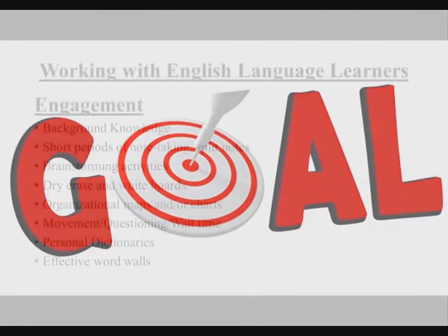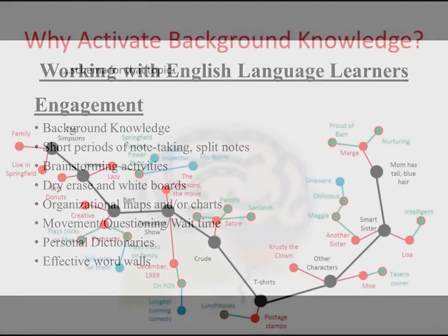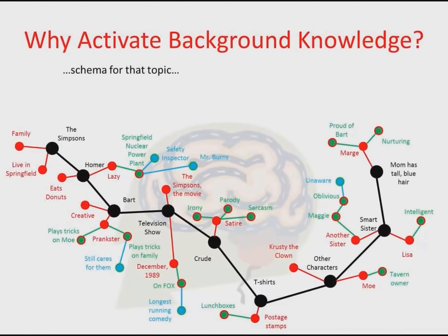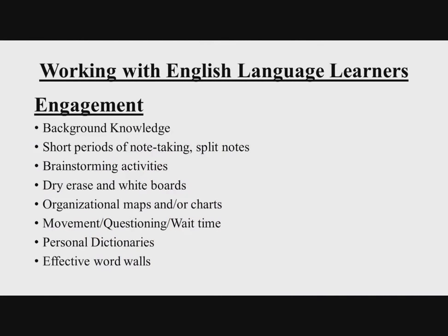Let's move on to the next component: engagement. In a lesson, it's important to take the time to go over background knowledge. The amount of time that you spend on background knowledge is going to depend on the complexity of the lesson. It doesn't make any sense to go through the lesson if the students don't have the necessary background knowledge. You might spend five minutes on background knowledge, or it may be necessary to spend as much as a half hour. It all depends on your students and what you feel is necessary.